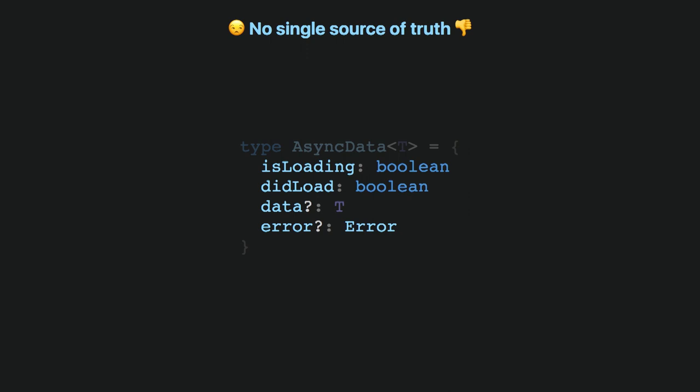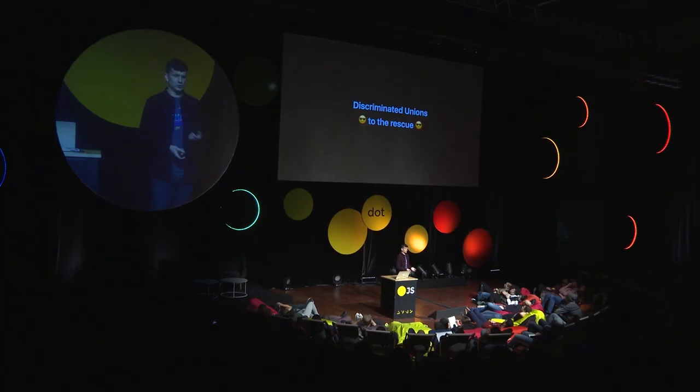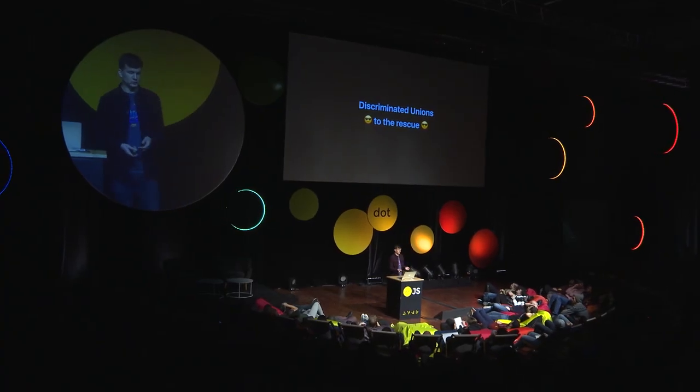The problem here is that we don't have a single source of truth. All of the cases relate to each other, and the four cases we saw at the beginning — not asked, failure, or success — are combinations of this. Our first option to solve this is to add a bunch of tests across the application to make sure we don't get into this inconsistent state. But we can use instead the type system, and in particular, discriminated unions.